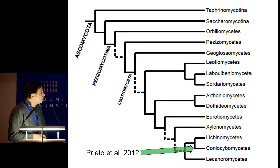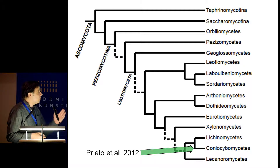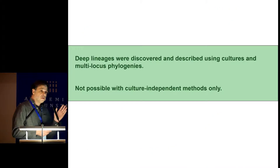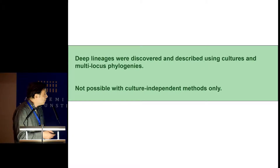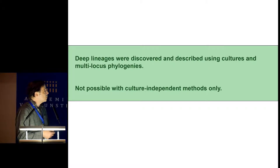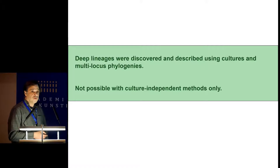Another example: the Coniocybomycetes, described by Prieto et al. in 2012 — mostly lichen-forming fungi, representing an independent origin of the mazaedium. All this is happening at a fast rate, and I don't think we've peaked. One key take-home message is that these deep lineages were discovered and described using cultures and multi-locus phylogenies — without culture-independent methods alone, that would not be possible.